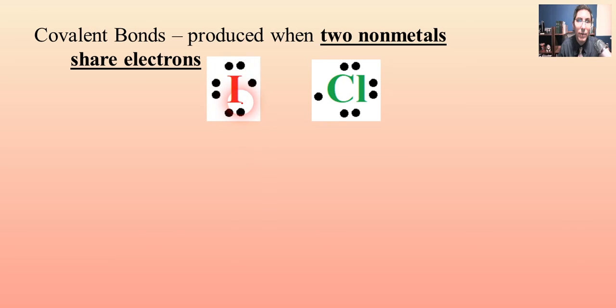I have written the symbol for iodine, and the periodic table shows us that since it's in group 17, it has seven valence electrons. So I've positioned these seven valence electrons around the iodine atom. I've done the same thing for chlorine. It has seven valence electrons as well, so I've positioned those around the chlorine atom in a similar fashion.